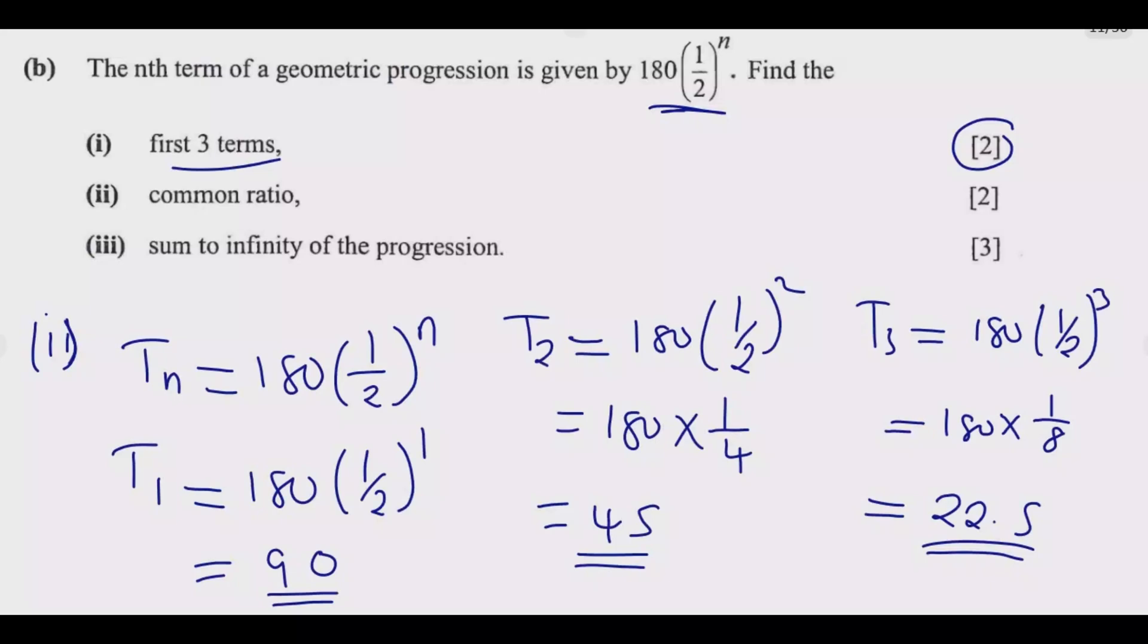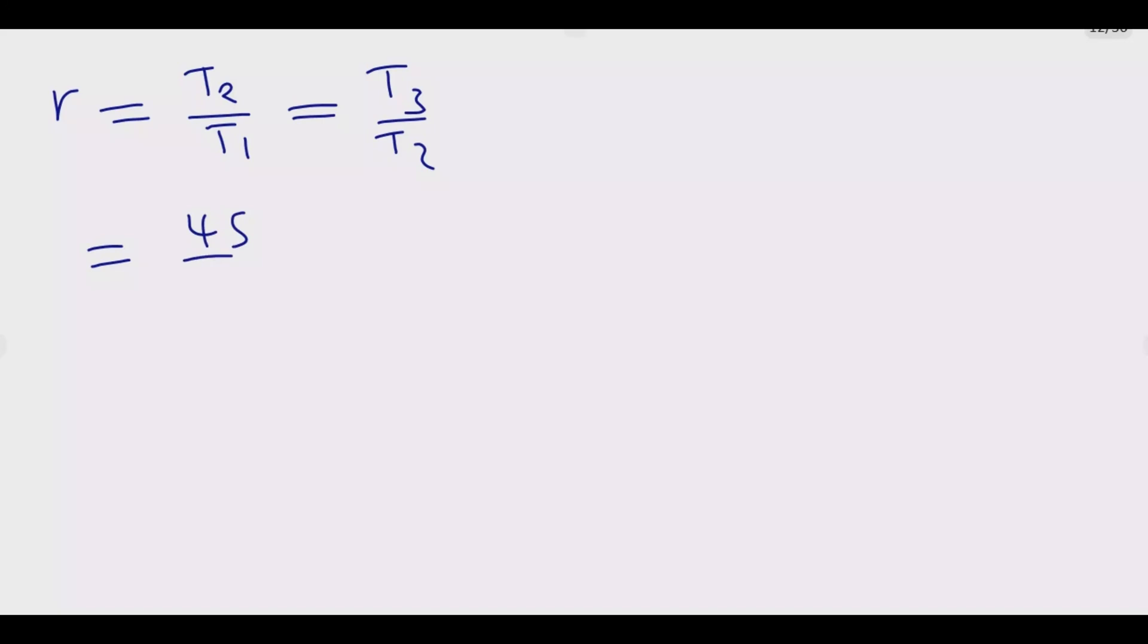So the common ratio r is given by T₂ over T₁ which should be the same as T₃ over T₂. What is T₂? T₂ is 45. T₁ is 90. T₃ is 22.5. So it's going to be 45 divided by 90 which is going to give me 1/2. Then just to prove, we are going to have T₃, 22.5 over 45 which is 1/2.